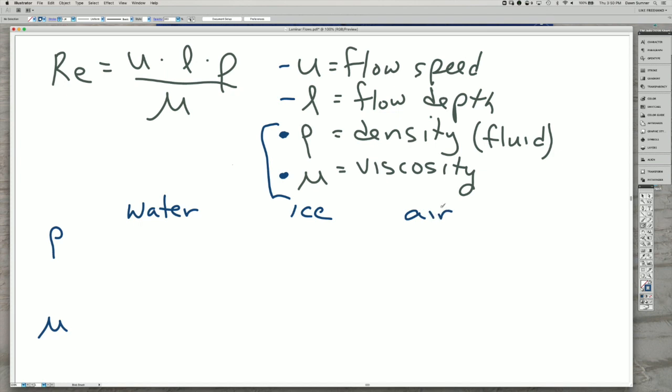There are other types of flows too, but these are the ones we're going to talk about. So the density of both water and ice are about, we're going to use kilograms and meters. So 10 to the 3 kilograms per meters cubed. That's about 1 gram per centimeters cubed. And the same is true for ice. It's slightly less, which is why it floats, but it's pretty similar. And of course air is much less dense.